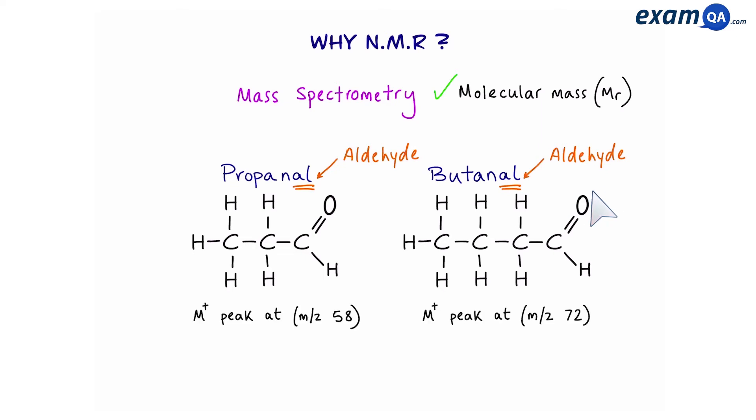However, propanal and butanil will have different mass spectra. Propanal will have a molecular ion peak at 58 and butanil will have one at 72, and this tells us they have two different MRs.